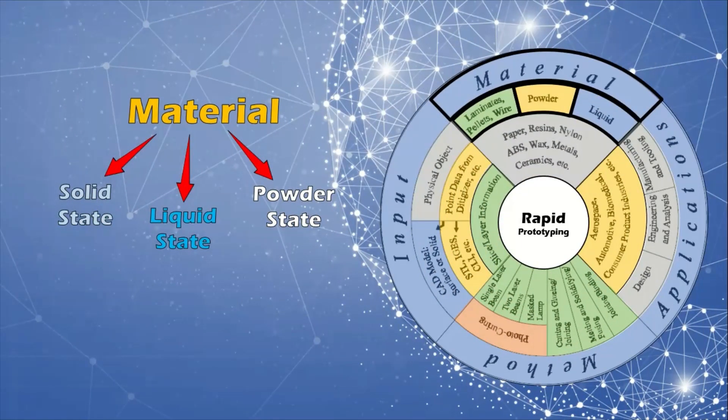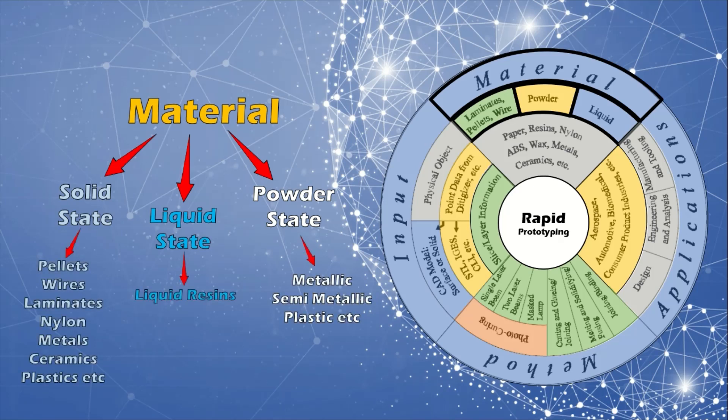Material: The initial state of material can come in either solid, liquid, or powder state. In solid state, it can come in various forms such as pellets, wire, and laminates. The current range of materials include paper, nylon, wax, resins, metals, and ceramics.